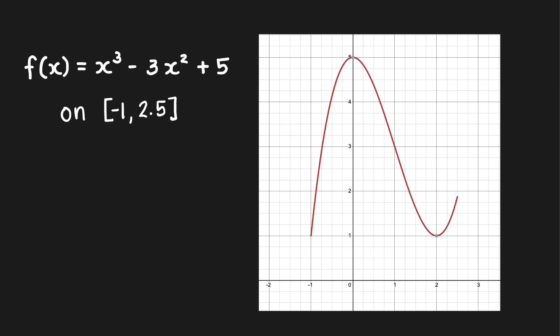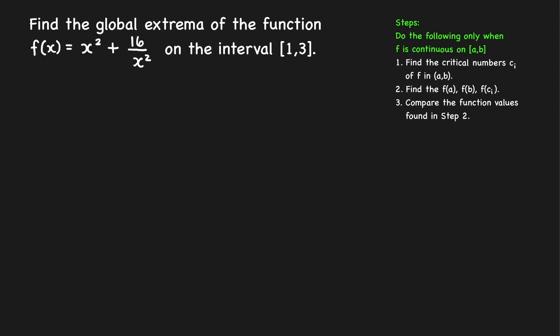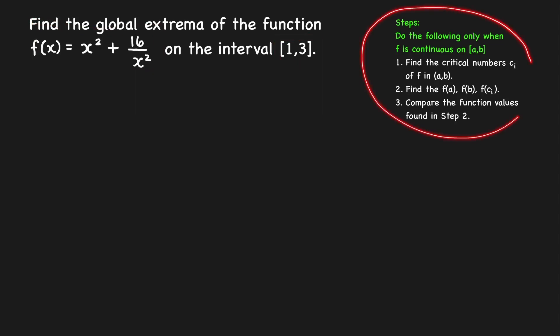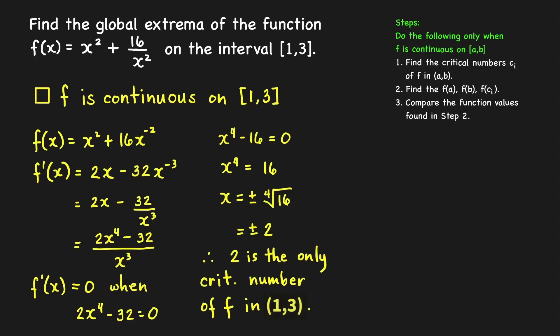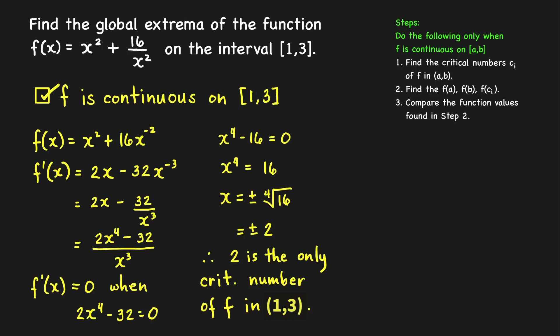Next problem: let's find the global extrema of this function on the closed interval [1, 3]. Note that the function is continuous at every non-zero number, so it is continuous on the closed interval [1, 3]. We satisfy the condition for the closed interval method.